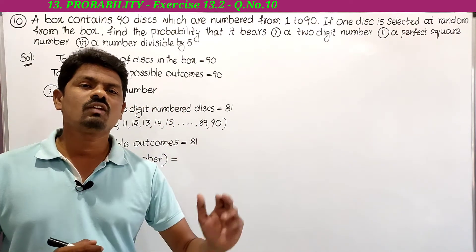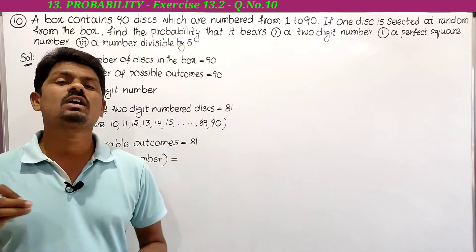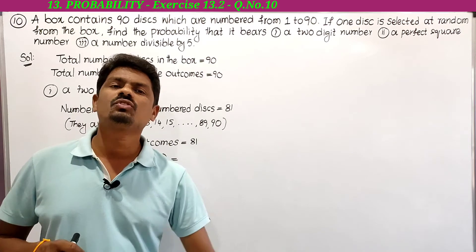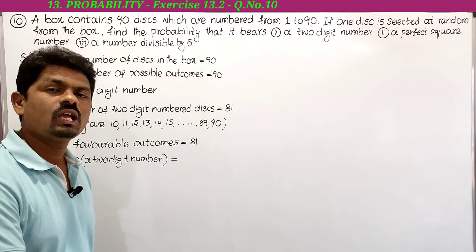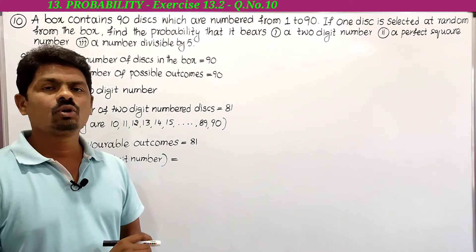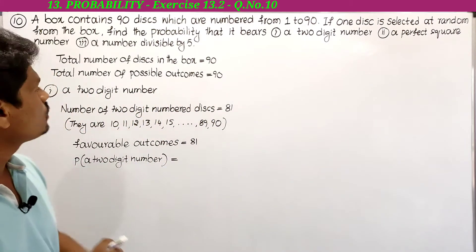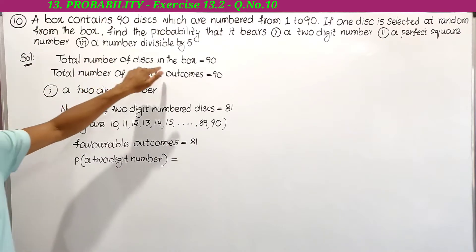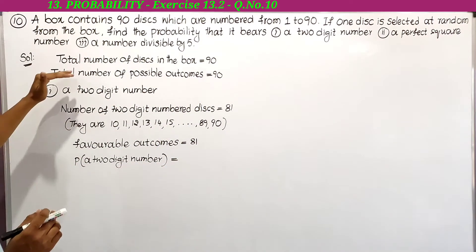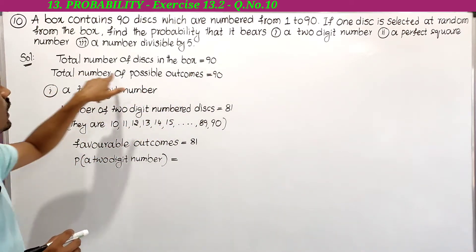In the box we have discs numbered 1 to 90. The total number of discs in the box is equal to 90. Since total number of discs are 90, the total number of possible outcomes in the experiment is also equal to 90.